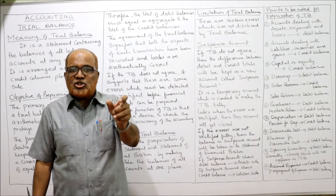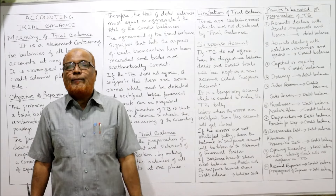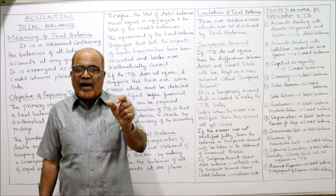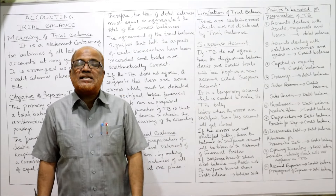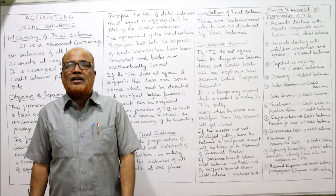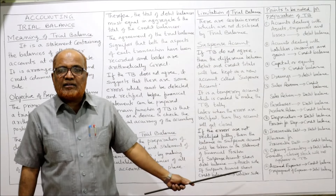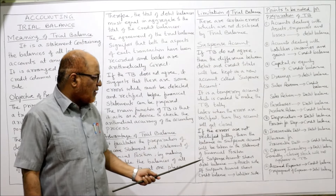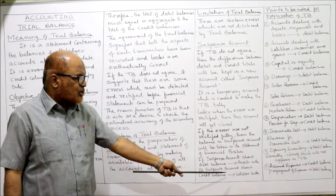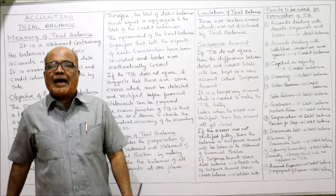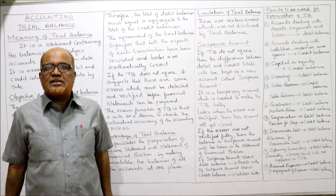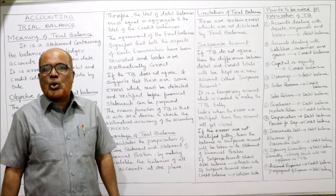In the statement of financial position we show the balance in the suspense account. If the suspense account shows a debit balance, it is taken on the asset side. If the suspense account shows a credit balance, it is taken on the liability side. Once the errors are rectified, the suspense account will get closed.